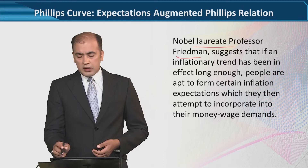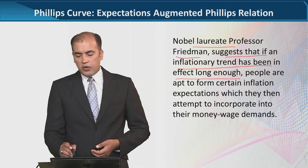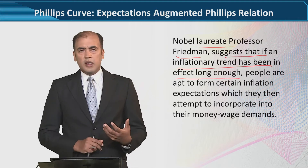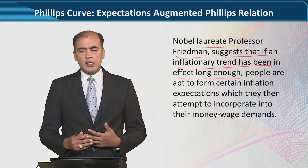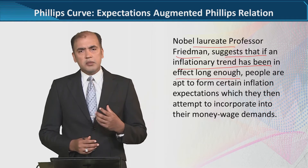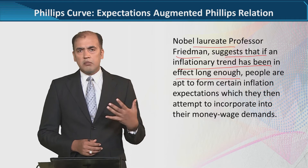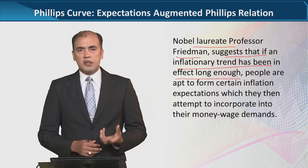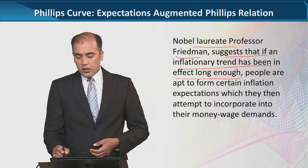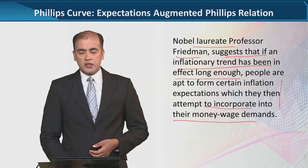Friedman, who is the Nobel laureate, basically suggested that if an inflationary trend has been set in for a long time — that is, if inflation has persisted in the economy for a long period — then people build up such expectations and expect that these rising trends of prices will continue.